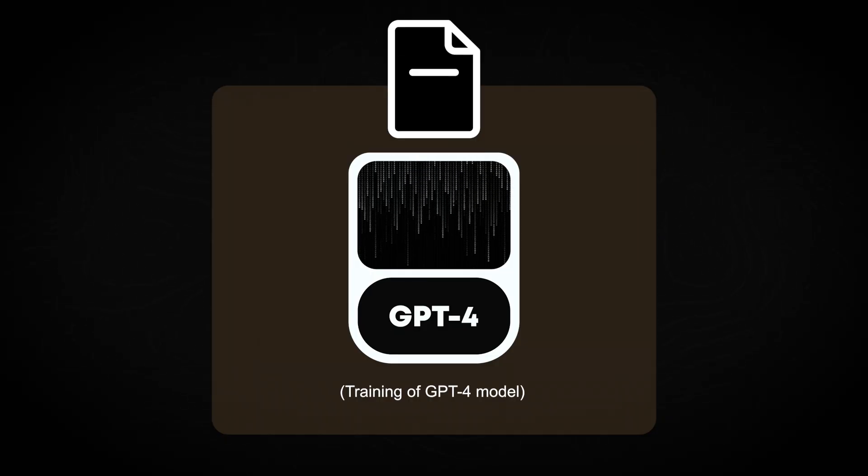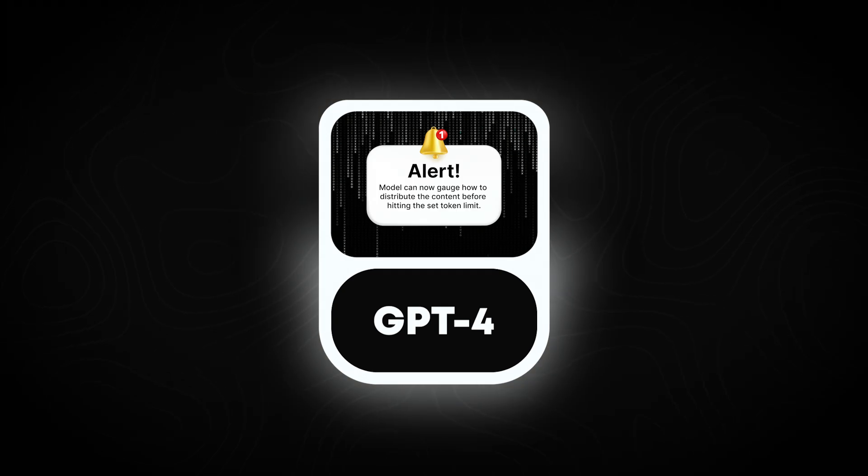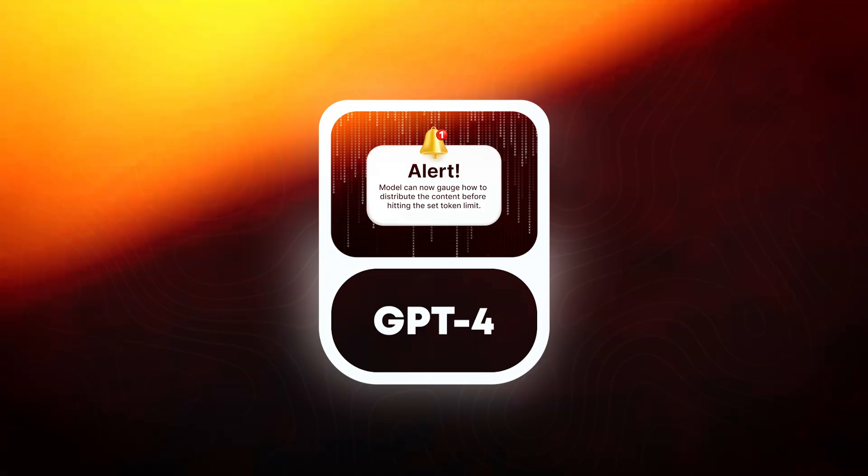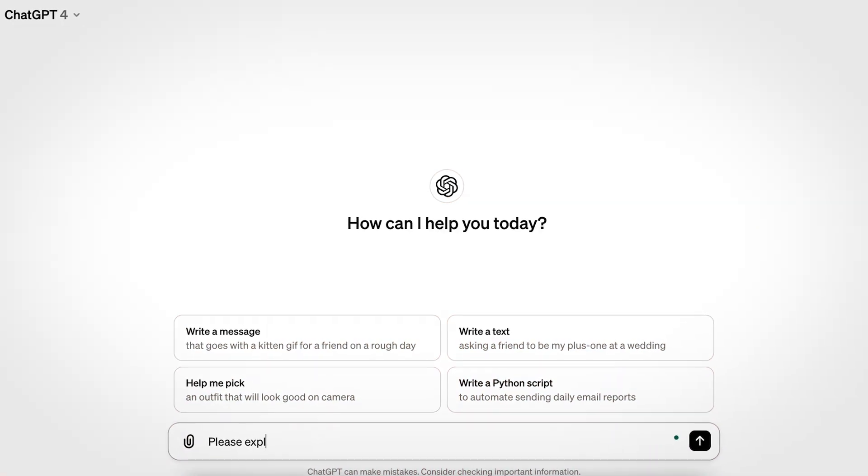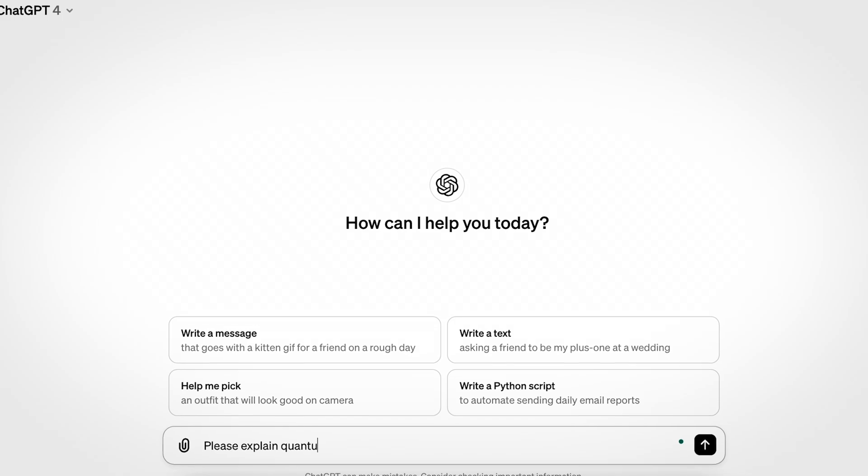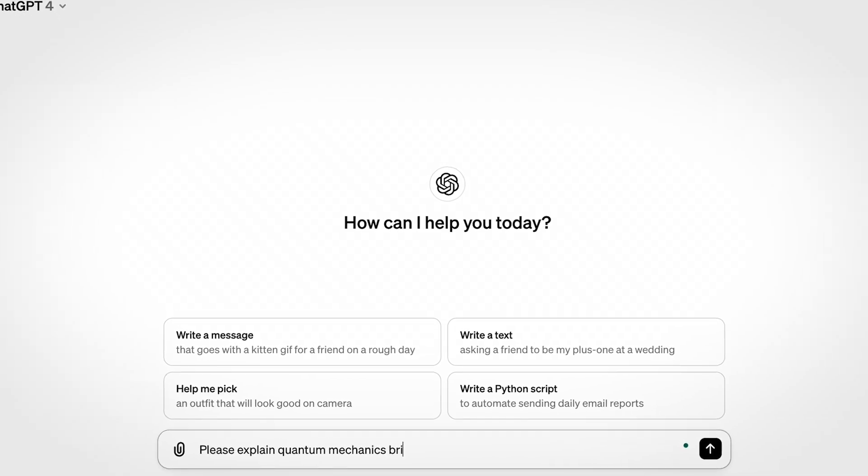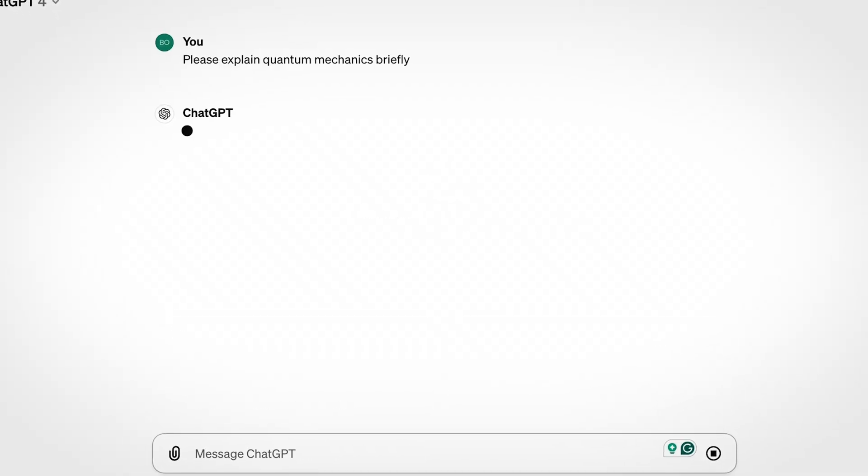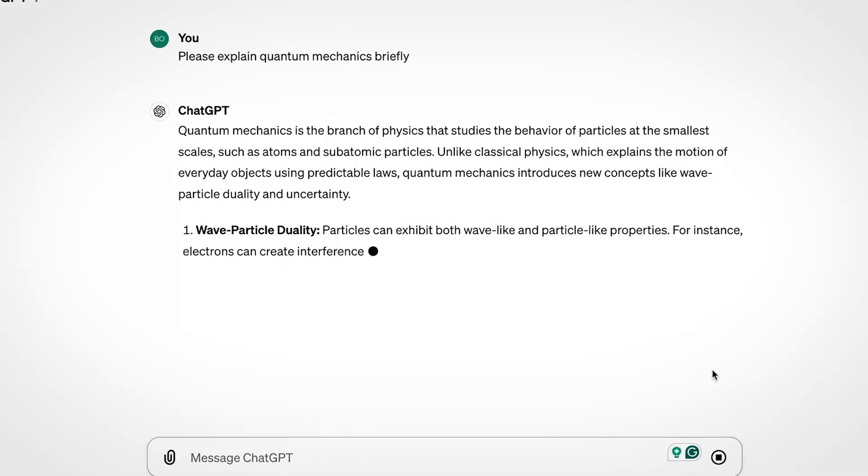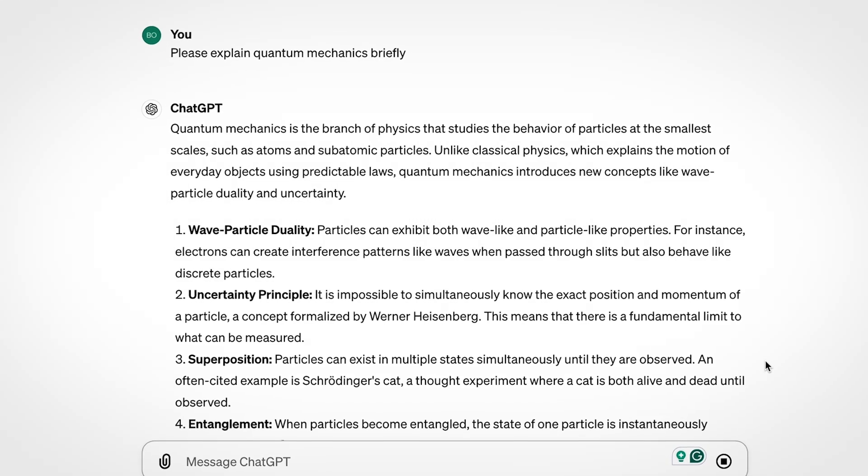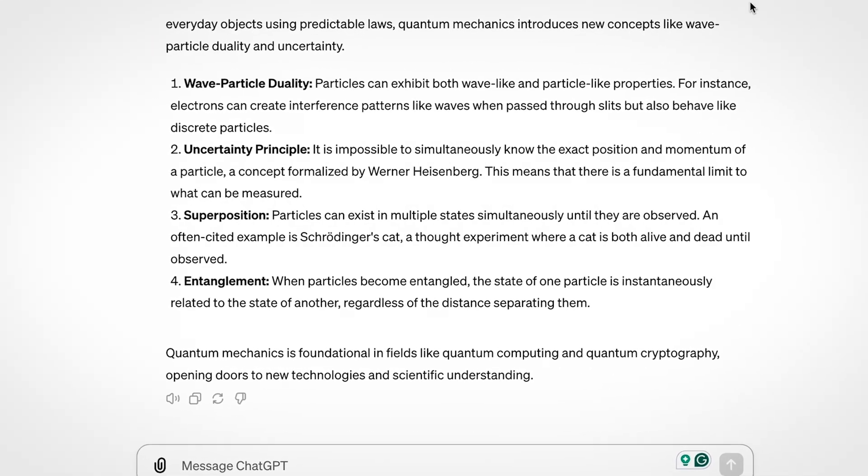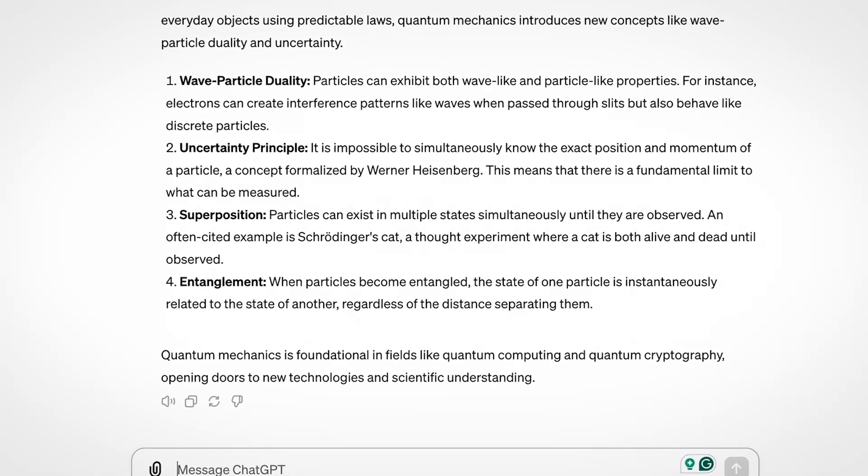When you set a maximum token limit or ask it textually, GPT-4 uses its extensive training on texts of various lengths to gauge how to distribute content appropriately within this constraint. For instance, if you ask the model to explain a complex concept like quantum mechanics briefly, it plans its response to convey the most critical information before reaching the token limit,